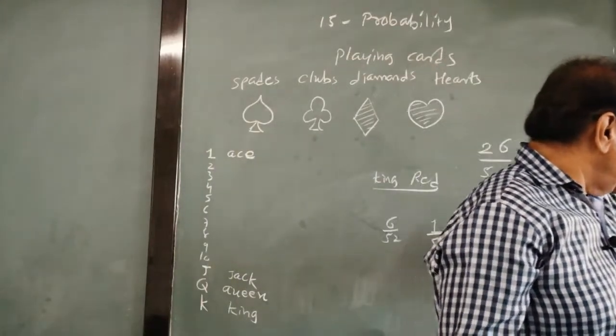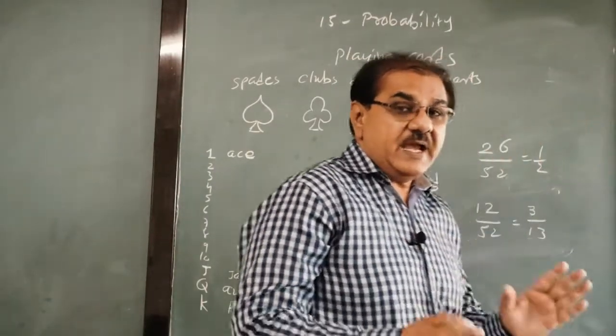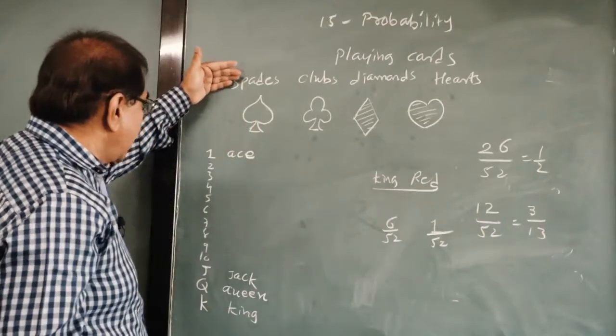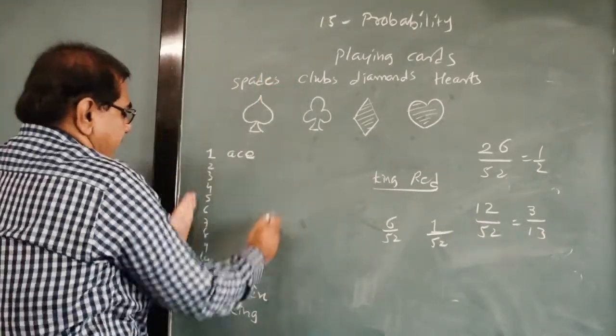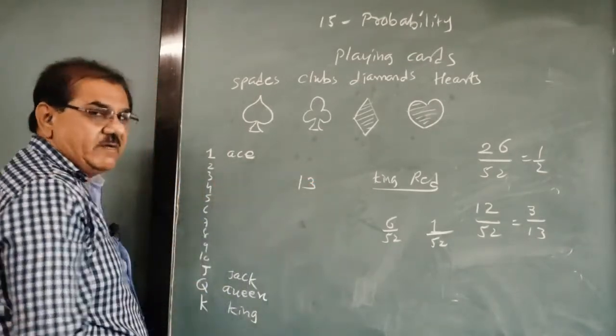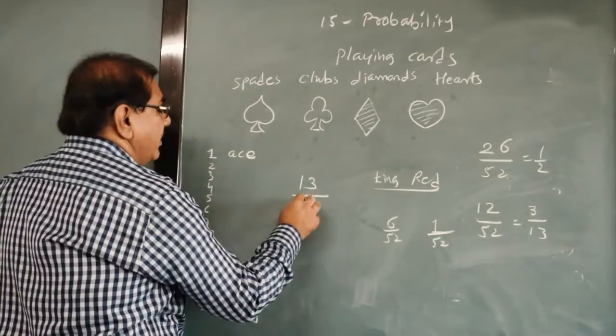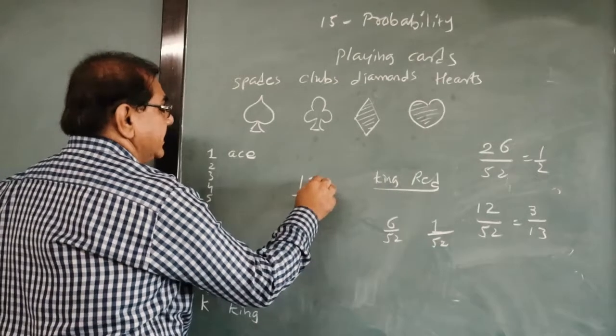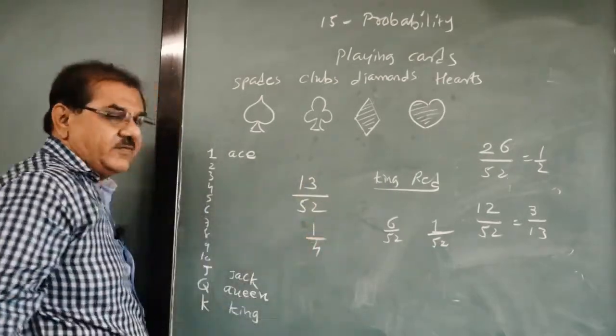Next is a spade, any card of the spade. So there are 13 cards in the category of spade. So the number of outcomes favorable to event is 13, and total outcome is 52. So it is 1 upon 4, 13 times 4, 52.